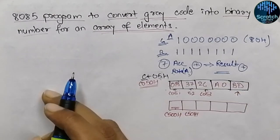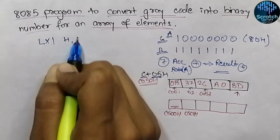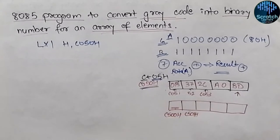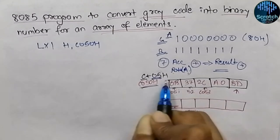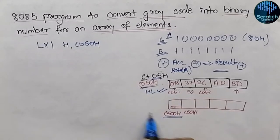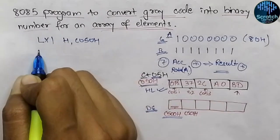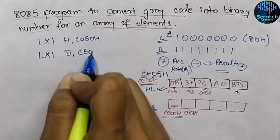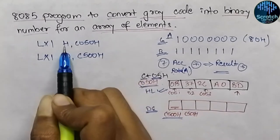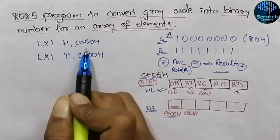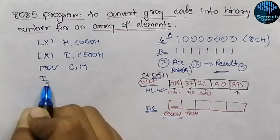Now we write the 8085 code. First, we input the count of total elements from C050 hex. We also initialize the DE register pair to point to C500 hex for storing outputs, using the instruction LXI D, C500H. The HL register pair handles the input addresses starting at C050. The count loaded from C050 is stored in register C, so C holds the total number of elements.